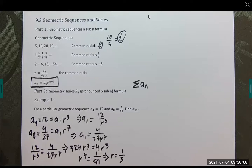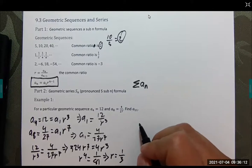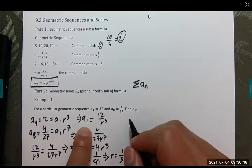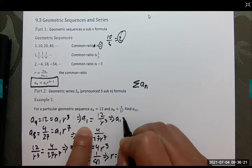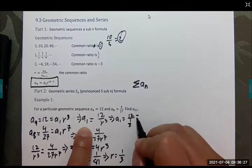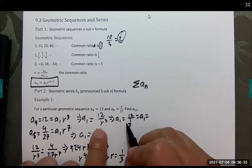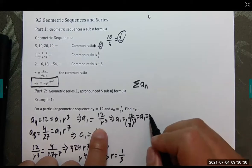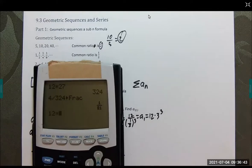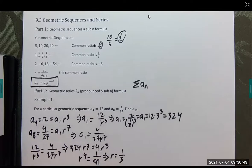We get r to the 4th is 1 over 81. When I take the 4th root, I get r equals 1/3. Now we can go back to finding a sub 1. A sub 1 is 12 divided by (1/3) to the 3rd, which means this is 12 times 3 to the 3rd, which is 324.